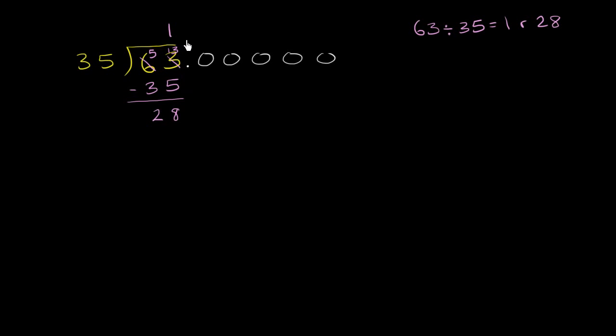So what we could do is we just make sure that this decimal is right over there. If we can now bring down a zero from the tenths place right over here, and you bring down that zero.